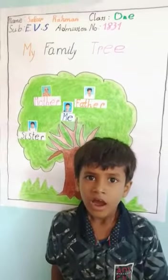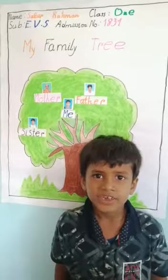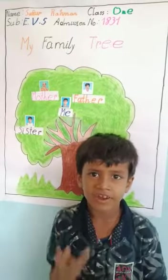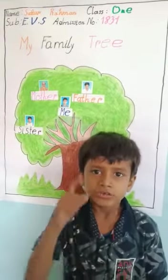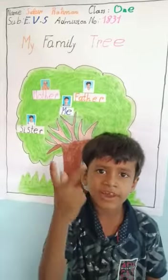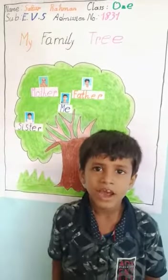A tree has many parts. In the same way, a family has three different parts: joint family, nuclear family, and single parent family.